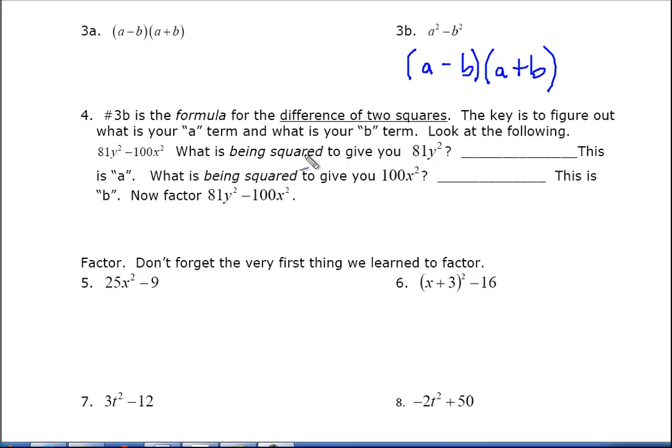So, in number 4, I'm asking you what is being squared to give you 81y squared, and that would be your 9y, and then what's being squared to give you 100x squared.